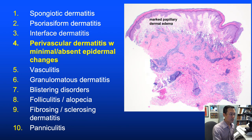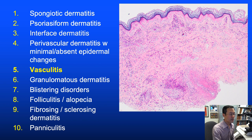Perivascular dermatitis with minimal or absent epidermal changes can still produce dramatic reactions, as in a bolus arthropod bite reaction. Vasculitis also has a perivascular pattern, but additionally requires evidence of vascular damage—fibrin, extravasated erythrocytes, nuclear dust, usually with neutrophils.